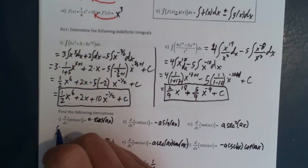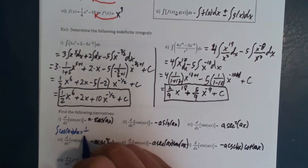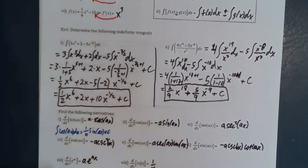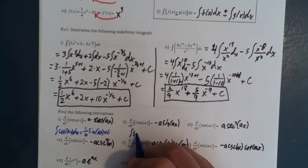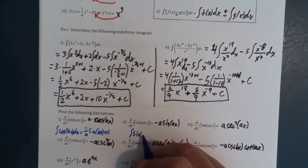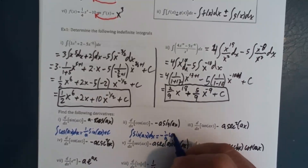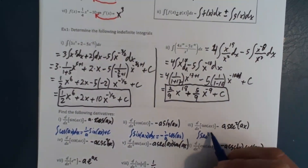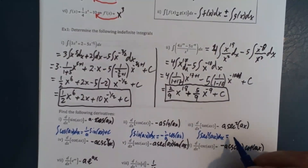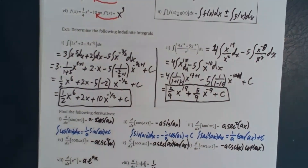This means the integral of cosine of ax dx is one over a times sine of ax, plus C. Notice we go exactly backwards and get one over a instead of a times. So the integral of sine of ax dx becomes negative one over a cosine of ax, plus C. And the integral of secant squared of ax dx equals one over a tangent of ax, plus C. Don't forget the plus C.